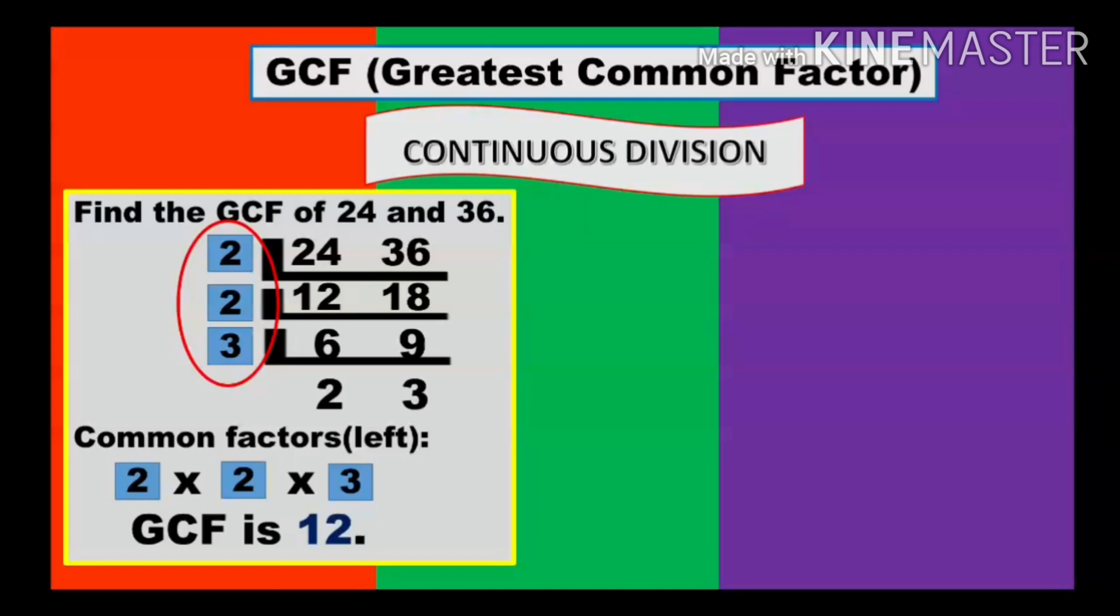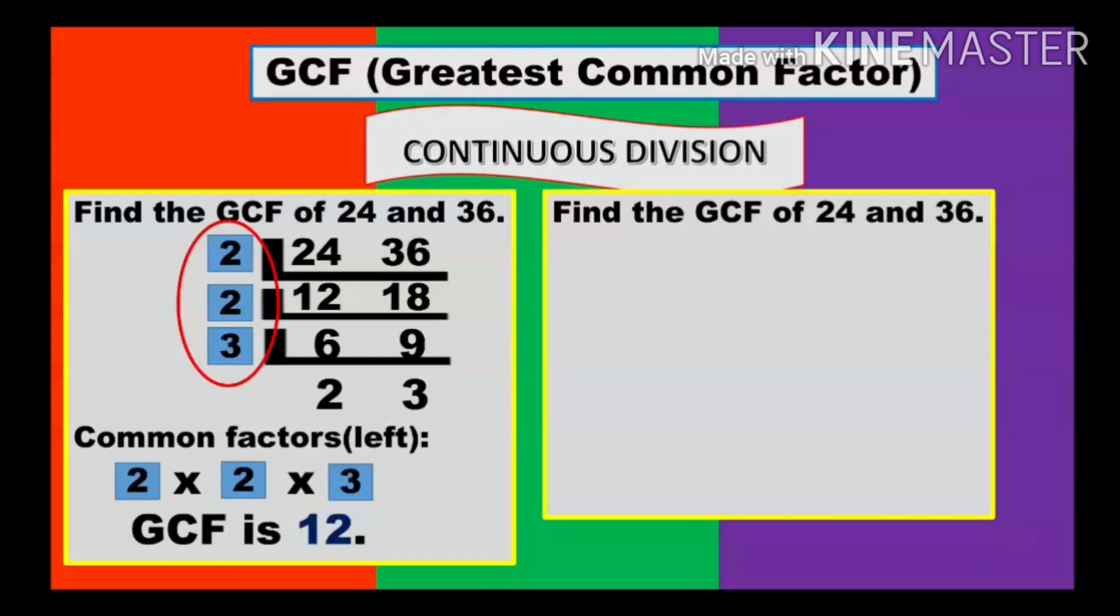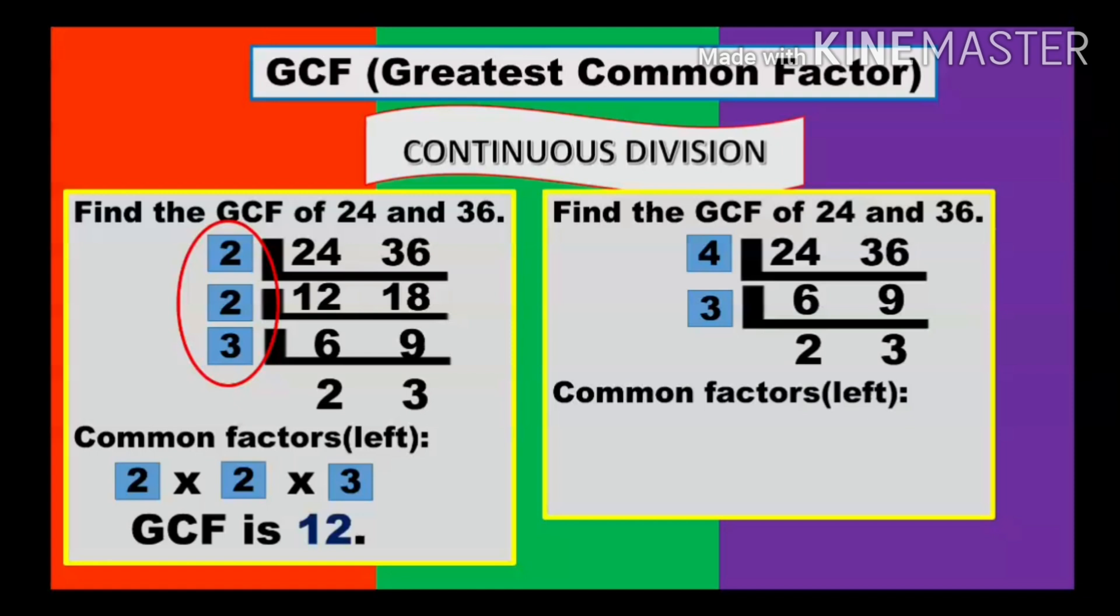What if you think of a different divisor first? No problem, as long as it can divide both numbers. For example, the same problem: find the GCF of 24 and 36. What if someone thinks of 4? That works. So divide 24 and 36 by 4. We have 6 and 9. Now for 6 and 9, we have 3. Divide 6 and 9 by 3. We have 2 and 3. For 2 and 3, nothing else except 1. So, same procedure. Identify those common factors: 4 and 3. Put it down. Then multiply it: 4 times 3 is 12. Therefore, the GCF is 12. It doesn't matter what you think of first, as long as it's correct.